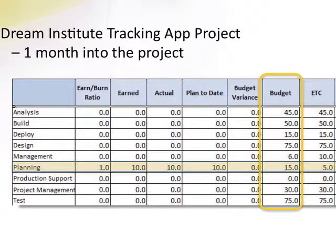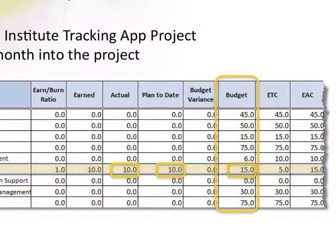If we look at the planning activity, we can see that 15 days were budgeted for this activity. Currently, 10 days have been spent, and 10 days is what was planned to have been spent by this point in the project. Finally, the estimated time to complete is showing 5 days. So everything seems to be right on track for the project so far.